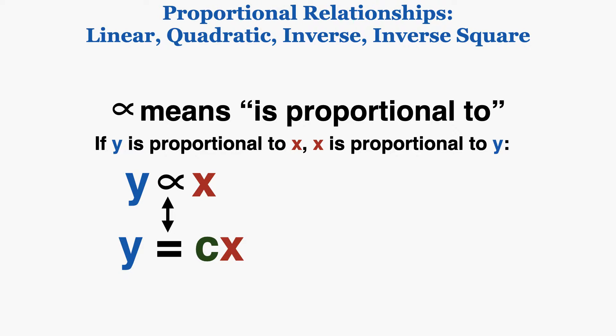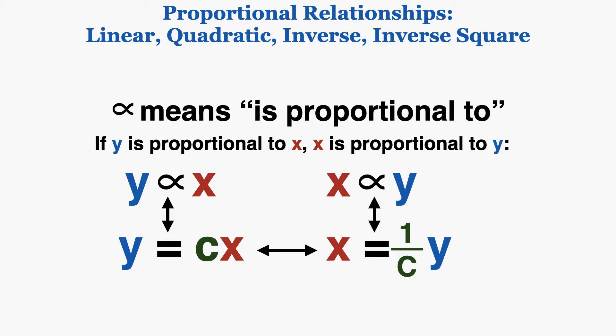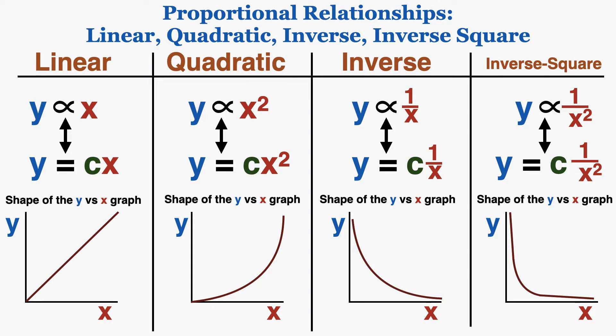One implication of this definition is if y is proportional to x, then x is proportional to y. Because if y equals a constant times x, that means x equals 1 over that constant times y, and 1 over a constant is itself a constant. So x is also equal to a constant times y, meaning x is proportional to y. So if y is proportional to x, x is proportional to y.